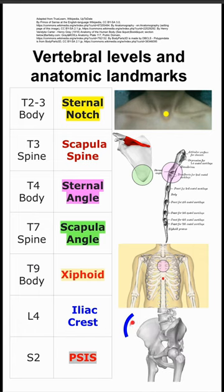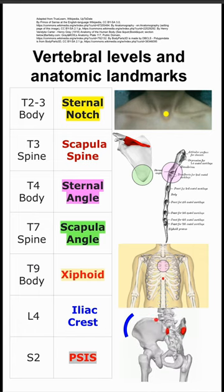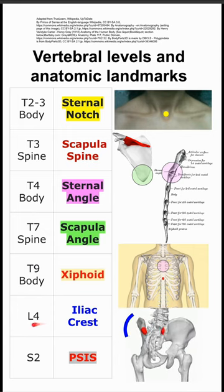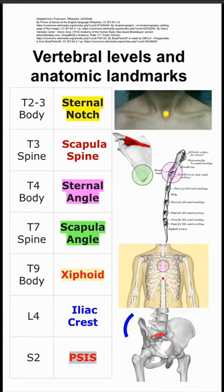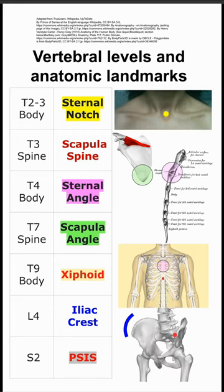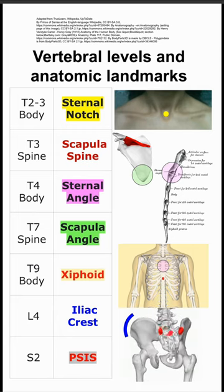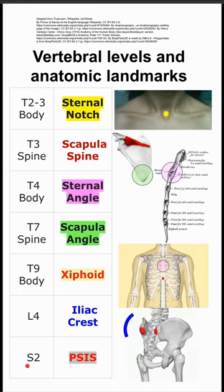Next, the iliac crest. The top of the iliac crest that you can see arching right here corresponds to L4. And lastly, the PSIS, posterior superior iliac spine, which you can see in the red on the back of this pelvis here. That corresponds to S2.